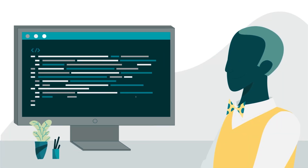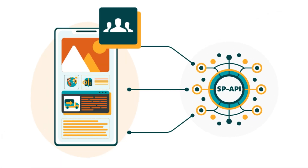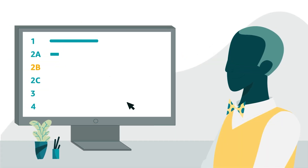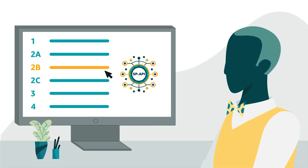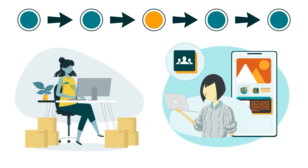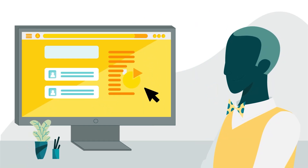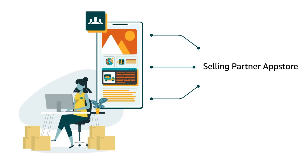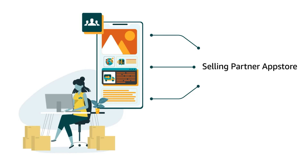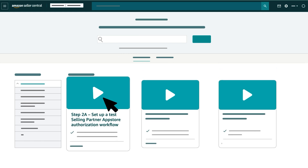This video is designed for developers who want to integrate an application with Selling Partner API. It covers one version of the second step in the integration process, providing step-by-step instructions for a public seller or vendor application initiated from a developer's website. If you want to integrate a public seller application initiated from a Selling Partner App Store detail page, proceed to Step 2A: Set up a Test Selling Partner App Store Authorization Workflow for relevant instructions.